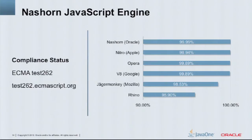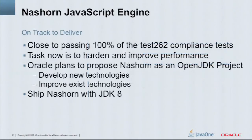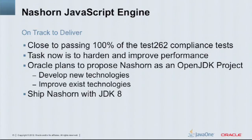We're on track to deliver. We're close to passing 100% of the TC262 compliance tests. Our task now is to harden it, scale it to bigger projects, and get performance levels up — there's still a fair amount of work to do. Since we're shipping with JDK 8, we do have some time to get this right. As announced yesterday, Oracle is planning to propose NASHORN as an open JDK project, and that should happen fairly soon. We want people to come on board to help develop new technologies with NASHORN, so think of this as a recruiting pitch.